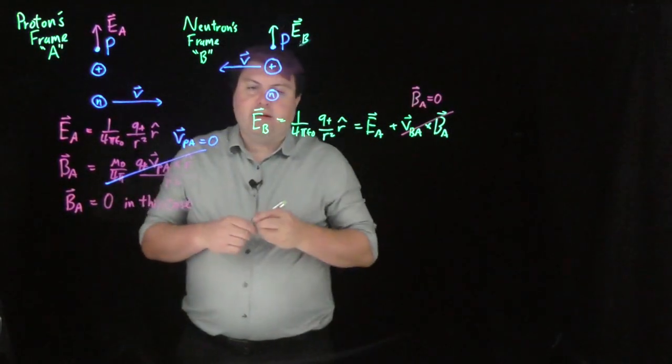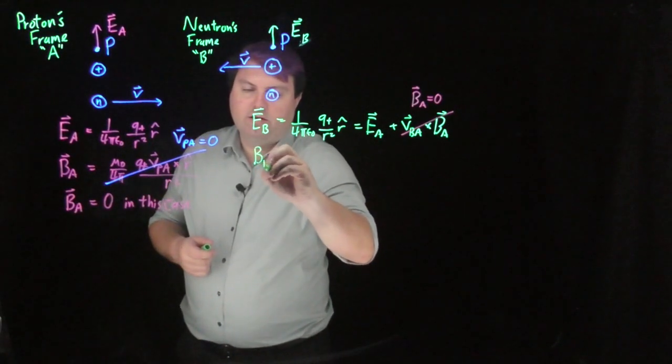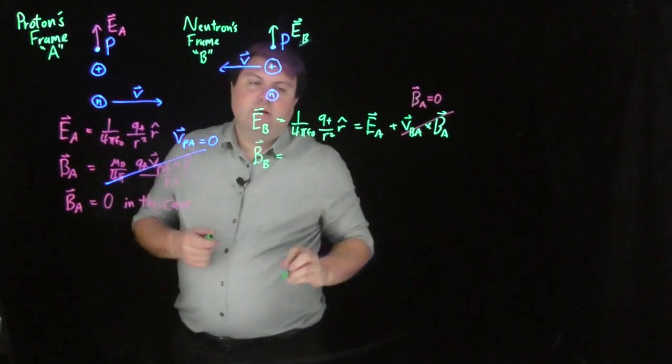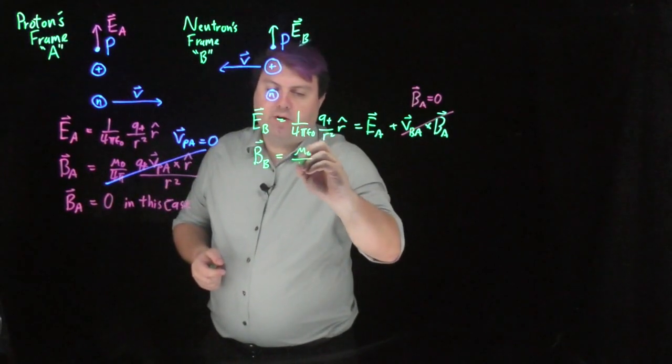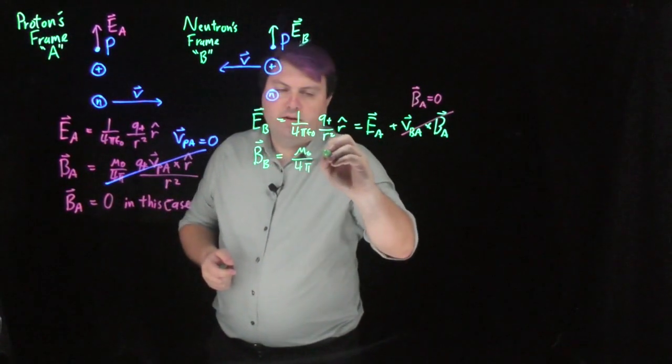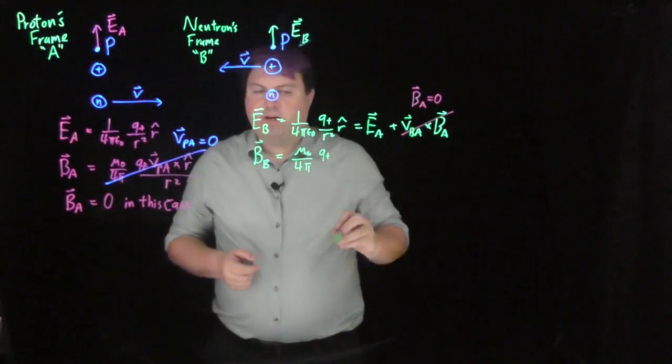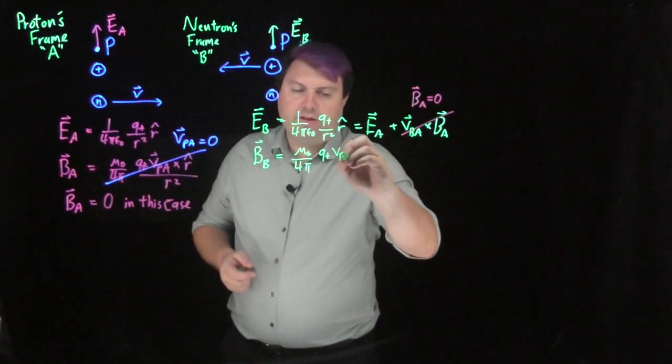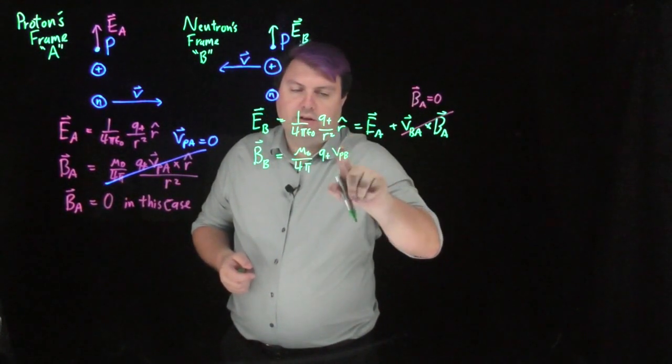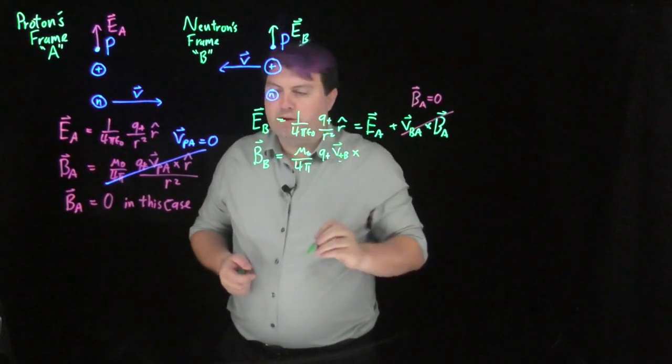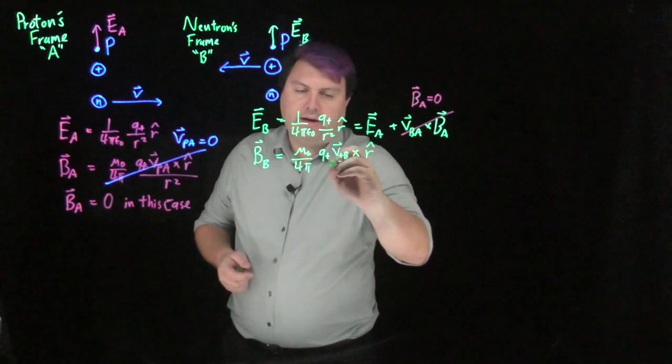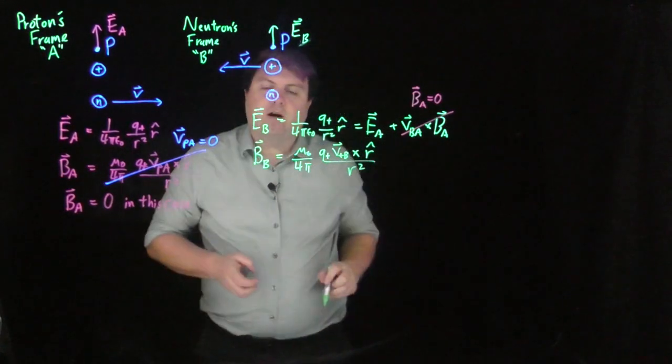And then we can calculate the magnetic field in a similar way as we did here. Mu naught over four pi, charge of the positive charge,